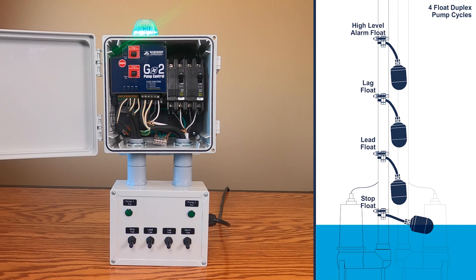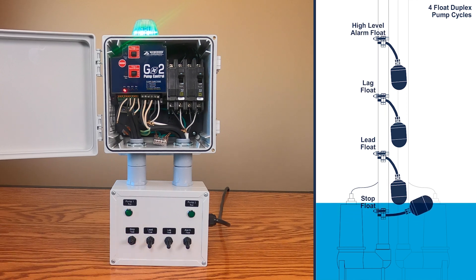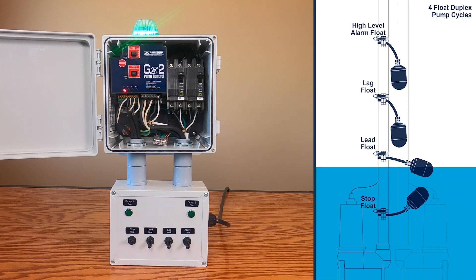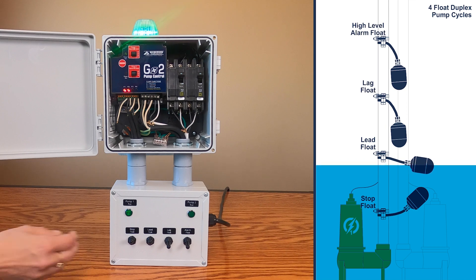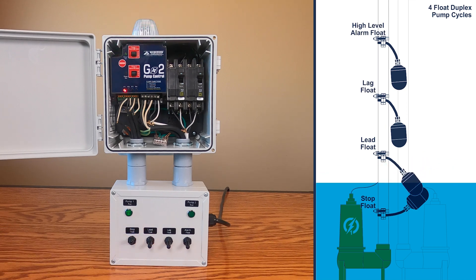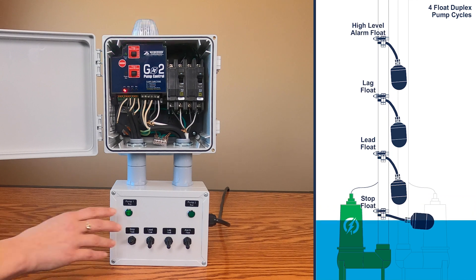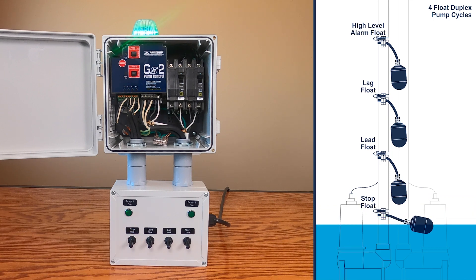On the second pump cycle, as the water rises, the off float will activate. The water level continues to rise and the lead float will activate and pump 1 will turn on. As the pump is lowering the water level, the lead float will tilt down, but the pump will remain on all the way down to the off float. This completes the second pump cycle. The pump alternates after each pump cycle.